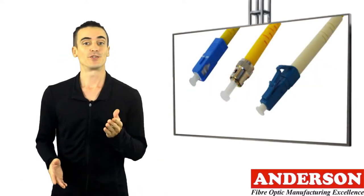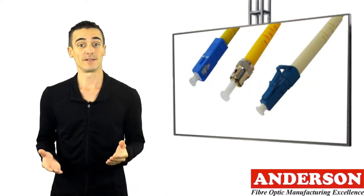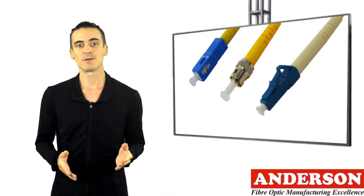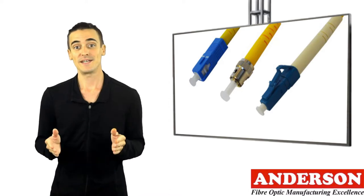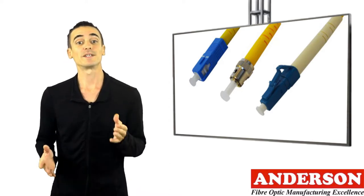Initially, the ferrule design was a 2.5mm ceramic cylinder, which allowed for mix and matching between connectors with the same ferrule size. Most common examples of these are ST, SC, and FC connectors.